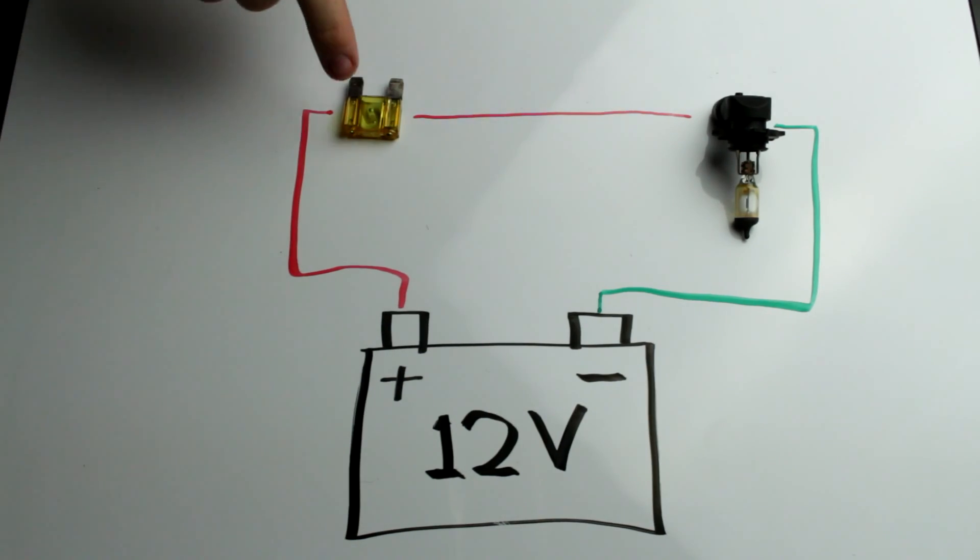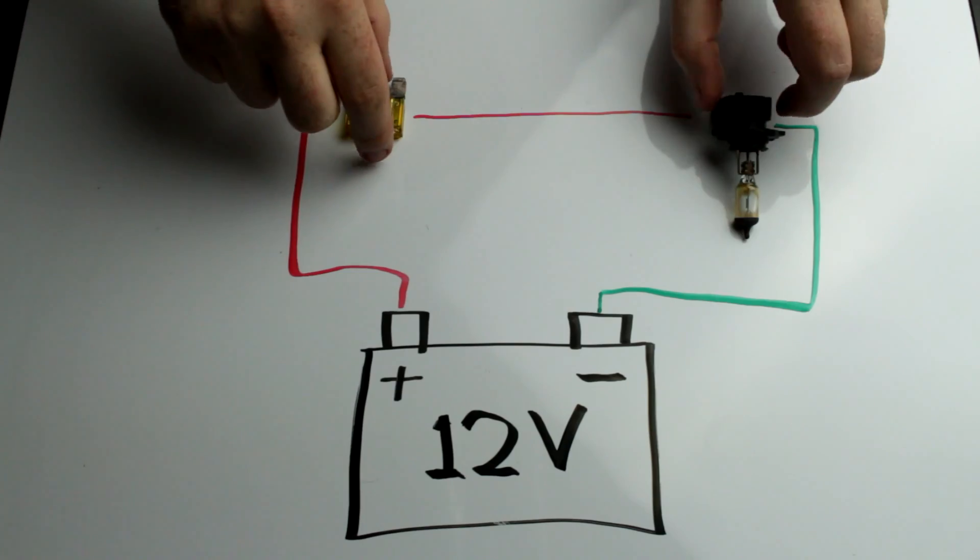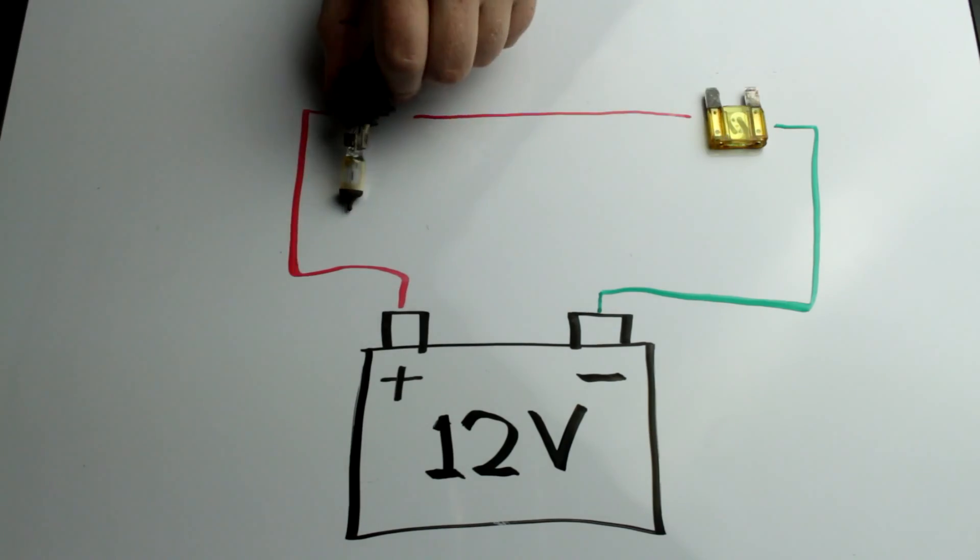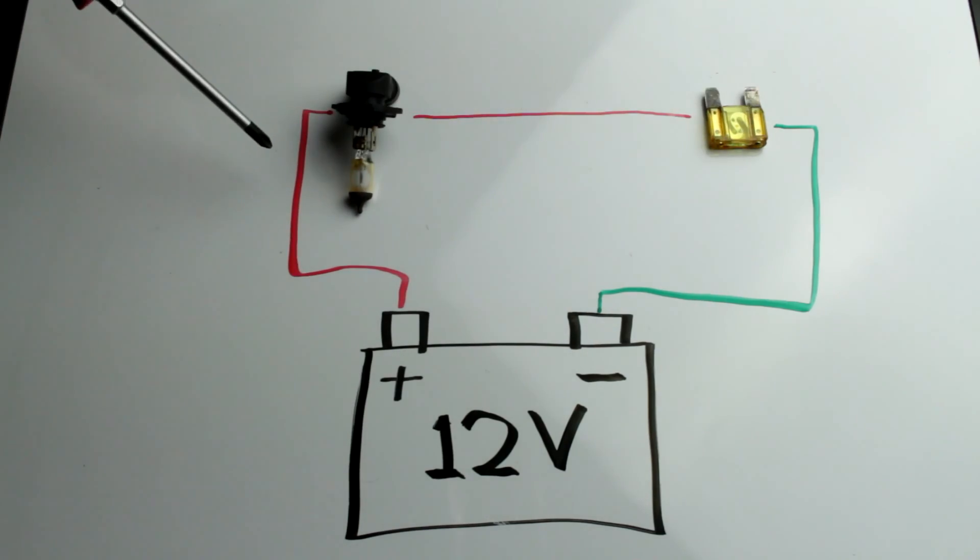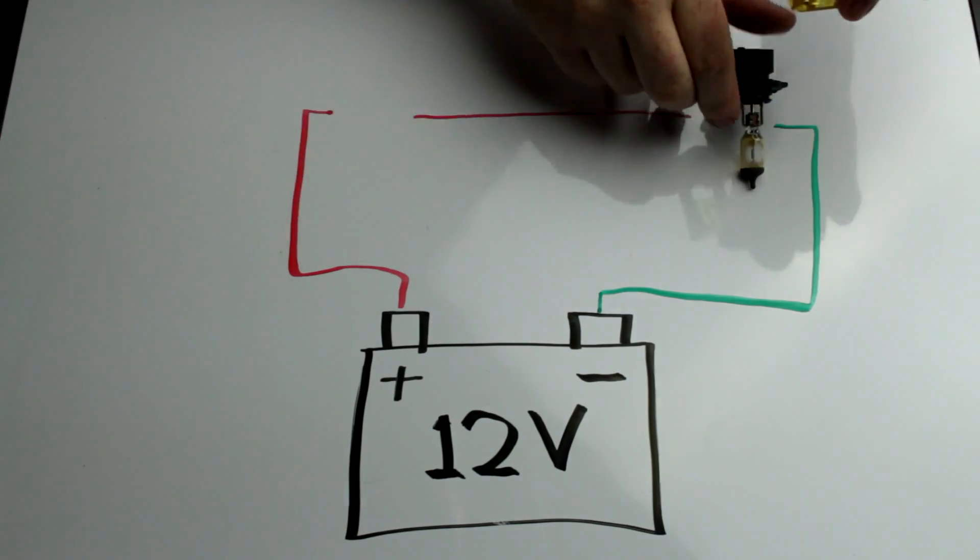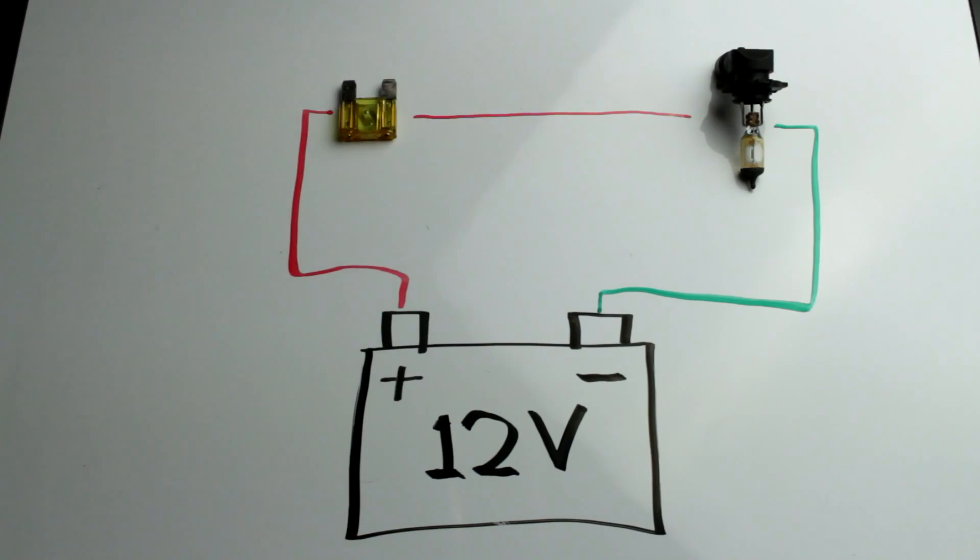Now let's get into why the fuse is located where it is. Let's switch these components around. In a series circuit like this one, amperage is the same the entire path. Amperage does not blow out components in the order that it reaches them. So technically, this layout would work. However, we are going to keep the fuse here for a reason.